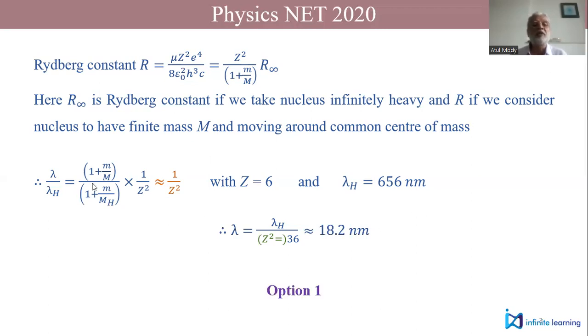So it's a very simple problem. We have neglected the effect of this mass because m/M, if you take m upon hydrogen, this would be 1/2000, and that would be almost 12 times more, so 1/24,000. So those are negligible effects. It would be nearly 1/36, that's 18.2.